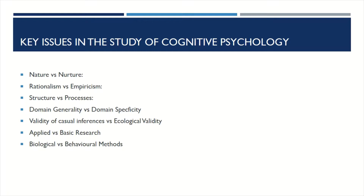Applied versus basic research: some research may be inclined towards practical applications, while others may be conducted into basic cognitive processes. Biological versus behavioral methods: the brain and its function may be studied directly during the performance of a cognitive task, or people's behavior in cognitive tasks may be emphasized.